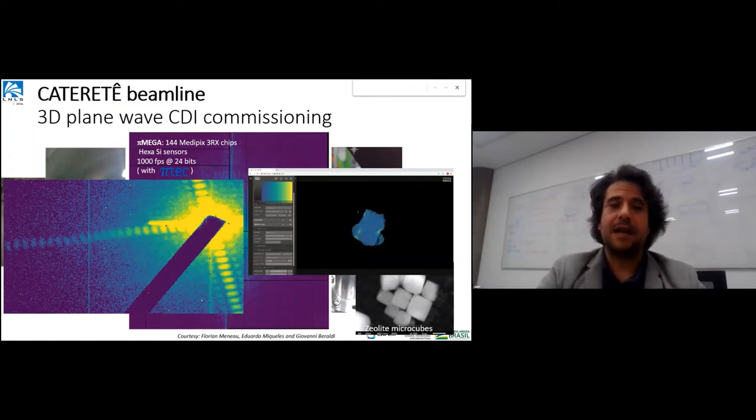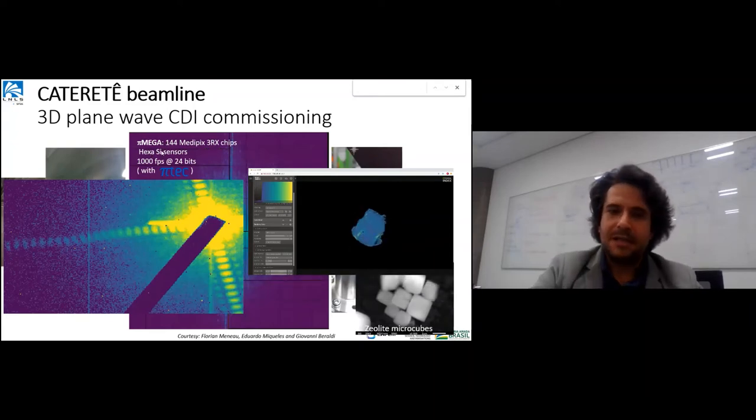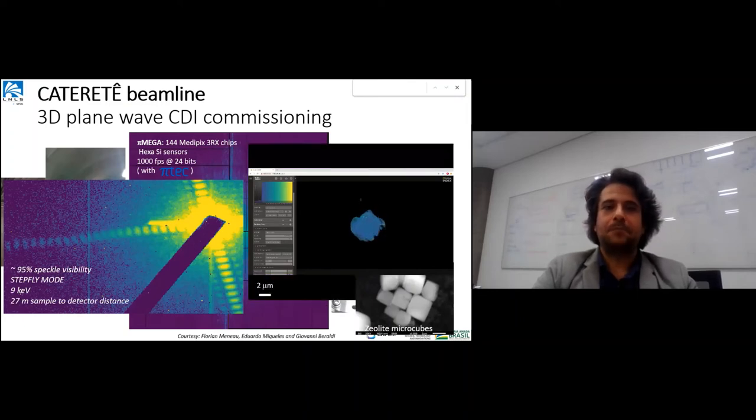We need a very fast detector and high dynamic range detector. This is one of the key flagship developments we did based on MediPix chips from CERN. We built this 144 chip detector area detector that goes into the Cateretê beamline. This is a flavor of what's going on in our commissioning.